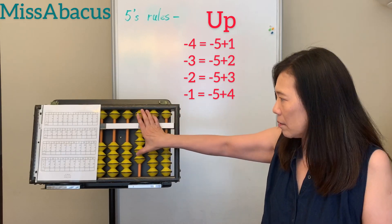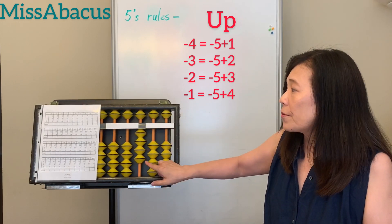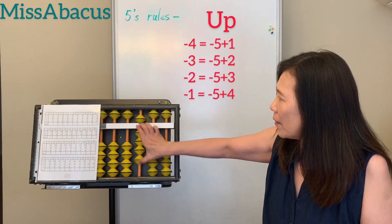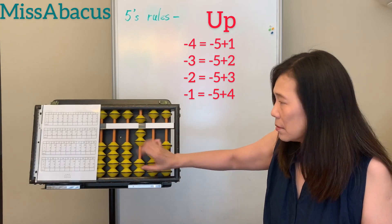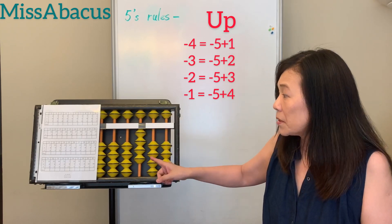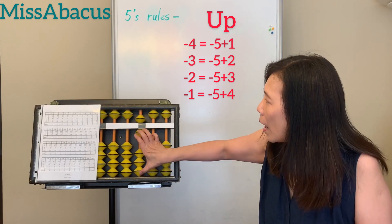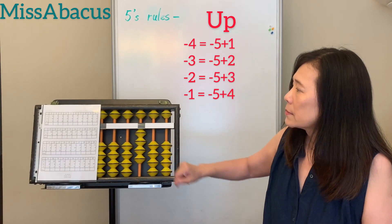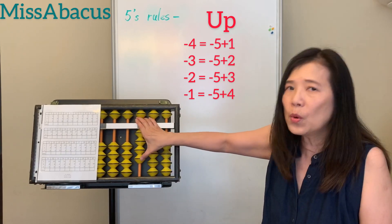So for plus: down. Down, minus up. Plus 4: down 5, up 1. Minus 4: up 5, up 1. Plus 3: down 5, up 2. Minus 3: up 5, up 2. Plus 2: down 5, up 3. Minus 2: up 5, up 3. Plus 1: down 5, up 4. Minus 1: up 5, up 4.